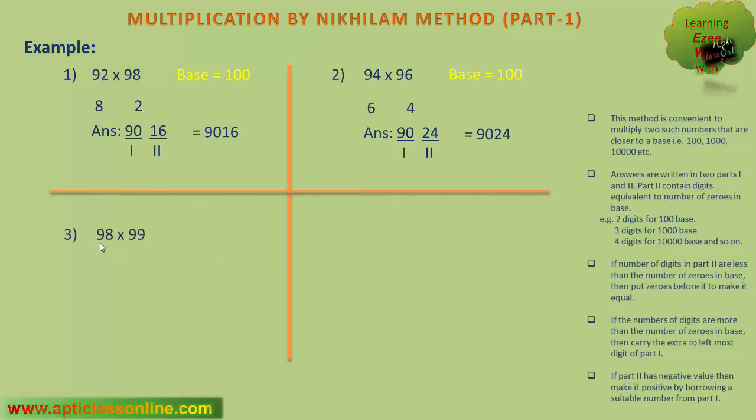Let us move towards the third example. Again, the base for this calculation is 100. The difference between 98 and 100 is 2, and the difference between 99 and 100 is 1. Now we can write down the answer. The answer will be in two parts. In the first part, we will write the difference of 98 and 1, or 99 and 2, that is 97. The second part will be the multiplication of 2 and 1, that is 2.